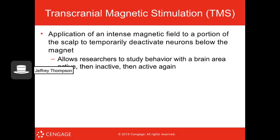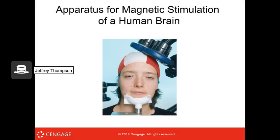Transcranial magnetic stimulation (TMS) applies a magnetic field to a portion of the brain, deactivating neurons below the magnet. By activating, then inactivating, then activating again a part of the brain, researchers can identify what that region is responsible for. The device looks like a helmet placed over the head with the chin resting on a support.